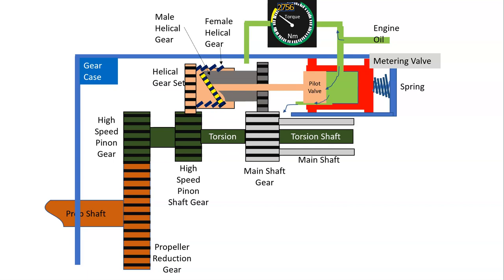What if we had an engine failure? In a turboprop, if we have an engine failure, the propeller will then be driving the engine rather than the engine driving the propeller, so we will get a negative torque. The pilot valve will move out in the opposite direction and we'll get a drop in pressure. The electronics can detect that drop in pressure and send a signal to a negative torque switch, which will then go to the feathering valve and allow the propeller to automatically feather.